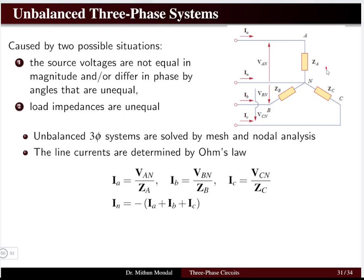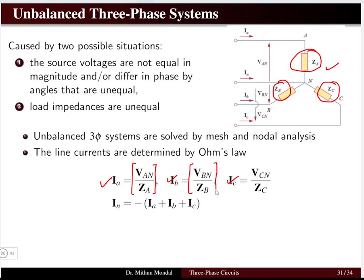Here we take the example of a star-connected unbalanced system where each phase has a different impedance. The currents Ia, Ib, and Ic flowing in each phase will be different depending upon the voltage of the phase and the impedance of that phase. Voltage divided by impedance in accordance with Ohm's law will be useful in finding the current in all three phases.